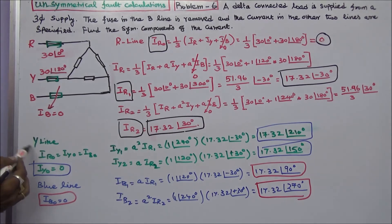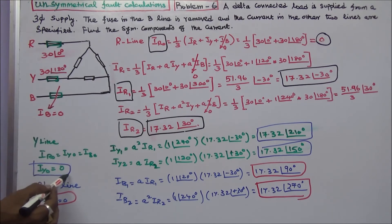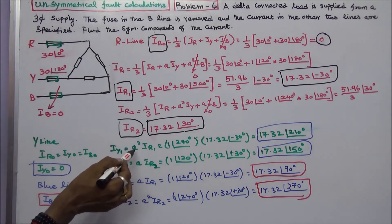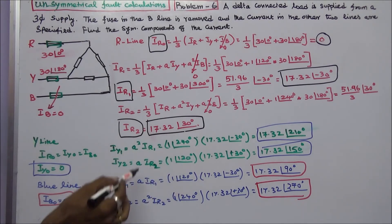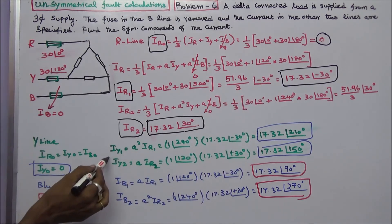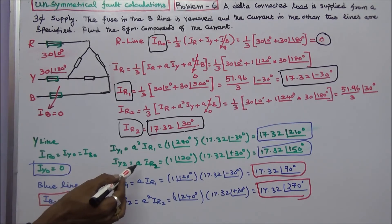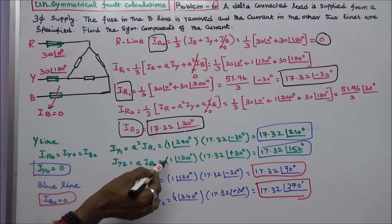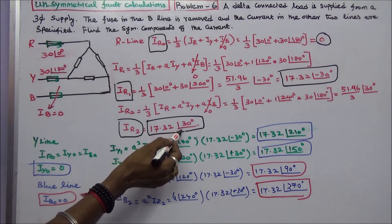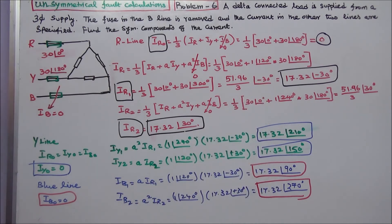Next, we consider the Y line. IY0 equals IR0 equals IB0, so IY0, the zero sequence current, is 0. The positive sequence current in the Y phase is IY1 equals A²·IR1. Here A² equals 1 angle 240 degrees and IR1 equals 17.32 angle minus 30 degrees, so IY1 equals 17.32 angle 210 degrees. IY2 equals A·IR2, where A is 1 angle 120 degrees and IR2 equals 17.32 angle 30 degrees, therefore IY2 equals 17.32 angle 150 degrees.